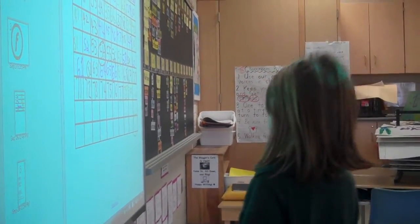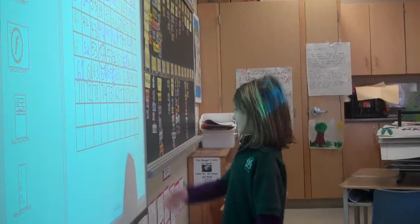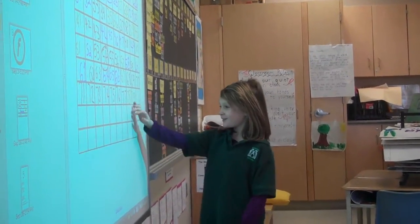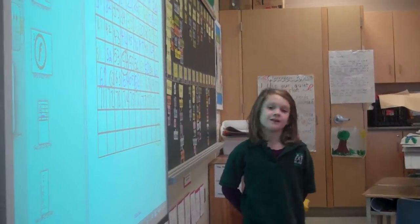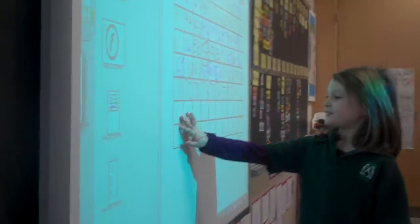I counted by two all the way over here, because this is the last row of two, and then I counted by ones all the way up here. Okay, so can you show me what you did? Count them all.